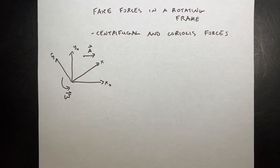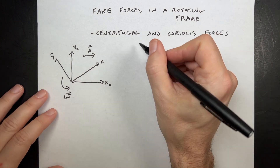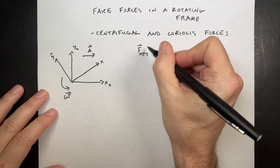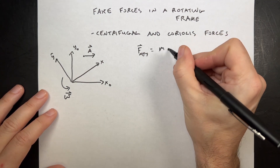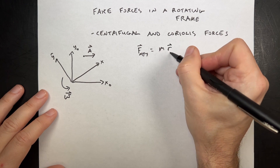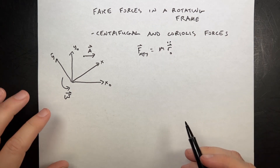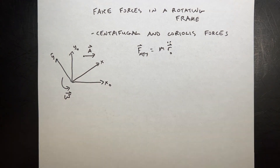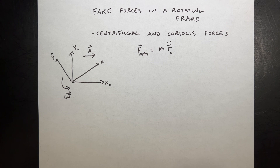We already know that if you have a reference frame that's at rest, then we can write Newton's Second Law and it looks like this: F-net equals M R-zero double dot. I'm using the O notation for my stationary reference frame. So the net force is mass times acceleration. But it doesn't work if the reference frame is accelerating.